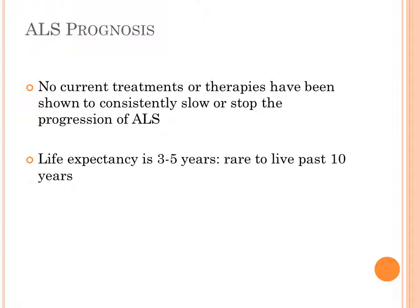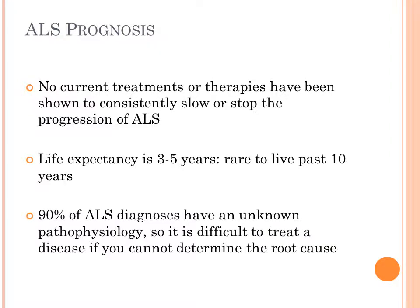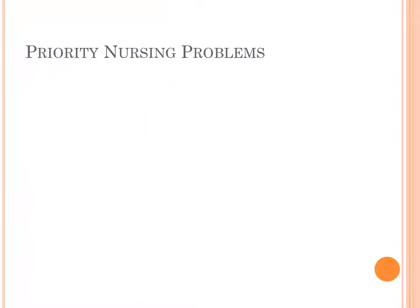ALS prognosis is very sad. There are no current treatments or therapies that have been shown to even slow the progression of the disease. We are really treating symptoms, and the disease progresses regardless. Life expectancy with ALS is three to five years; it is rare to live past 10 years. Ninety percent of ALS diagnoses have an unknown pathophysiology, which makes it difficult to drive research in the right direction.